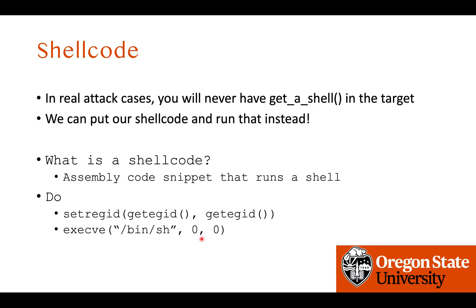Now let's talk a bit more about shellcode. In the real attack case, we will mostly never have a get_shell-like function in our attack target. So in such a case, we need to create a shellcode, put it in the program, and then jump to it. To inherit the privilege and execute the shell, what we need to do in the shellcode is call three functions: getegid first, then pass its return value as the argument to setregid to change the real and effective GID to the group ID of the target program, and then execve /bin/sh to spawn a shell. After that, you can run cat flag.